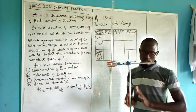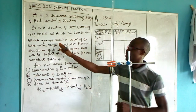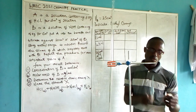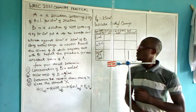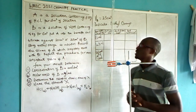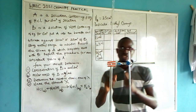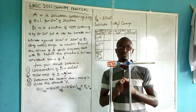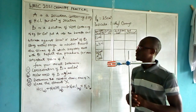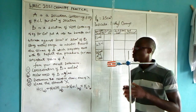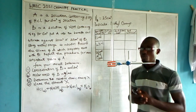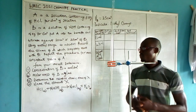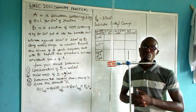Put A into the burette and titrate it against 25 cm³ of B using a pipette. We are using methyl orange as the indicator, because the reaction is between a strong acid and a strong base. Record the volume of A which completely reacts with B — the color change notifies us when the endpoint is reached — then repeat the procedure for consistent values.